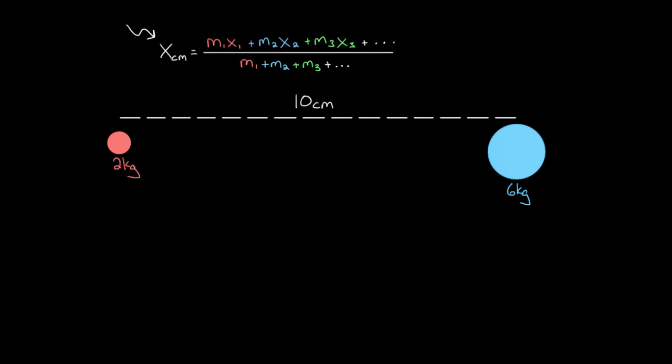So let's use this for this example problem right here. We'll have that the center of mass, the position of the center of mass is gonna be equal to - I'll take M one, which you could take either one as M one, but I already colored this one red. So we'll say the two kilogram mass is M one. We're gonna have to multiply by X one, the position of mass one.